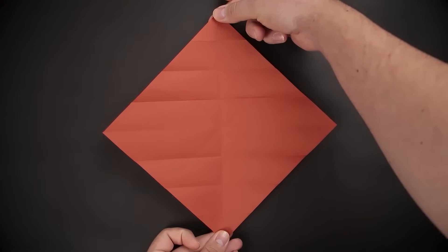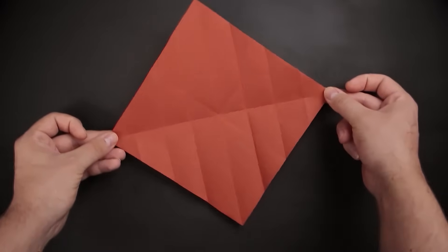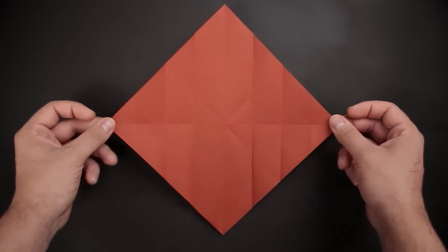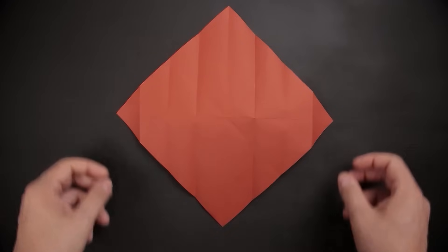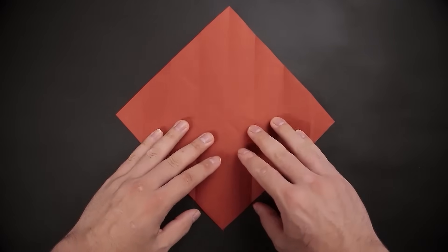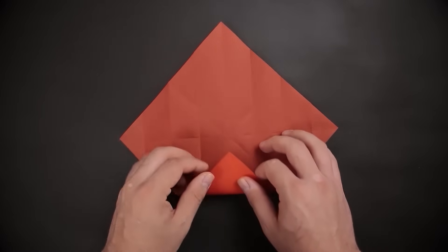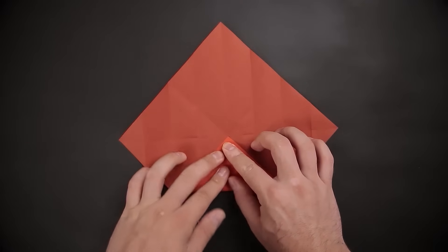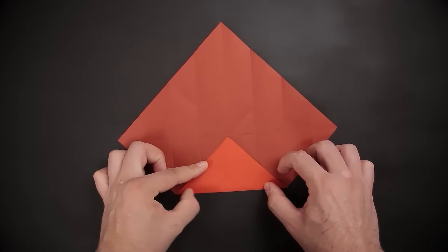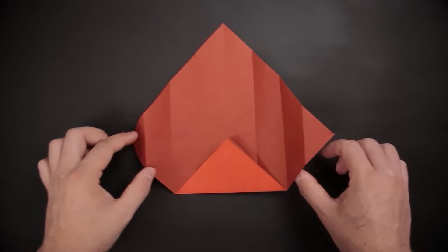Then, rotate the paper. And let's repeat the same with the other two corners. As before, we'll start from the bottom side by folding the corner to the middle. And then, we fold the edge to the middle as well.